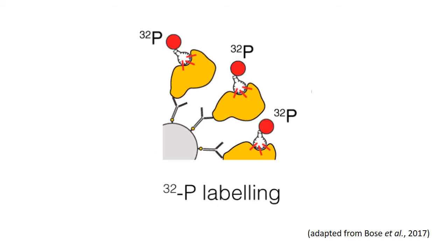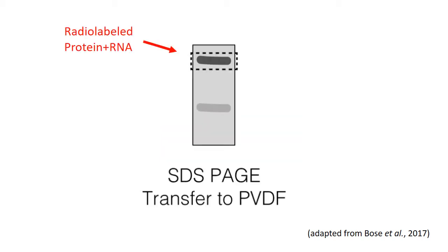The RNA that is pulled down along with your protein of interest is then labeled using radioactive phosphorous and run on a gel. You can ensure that you retrieve your protein of interest and its interacting RNA since it will run slower and will be radiolabeled.